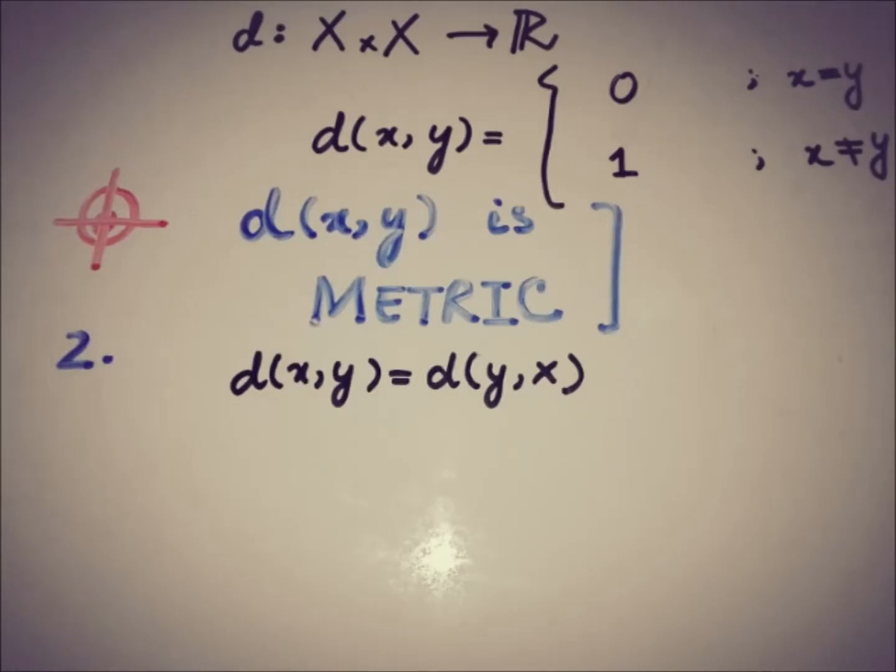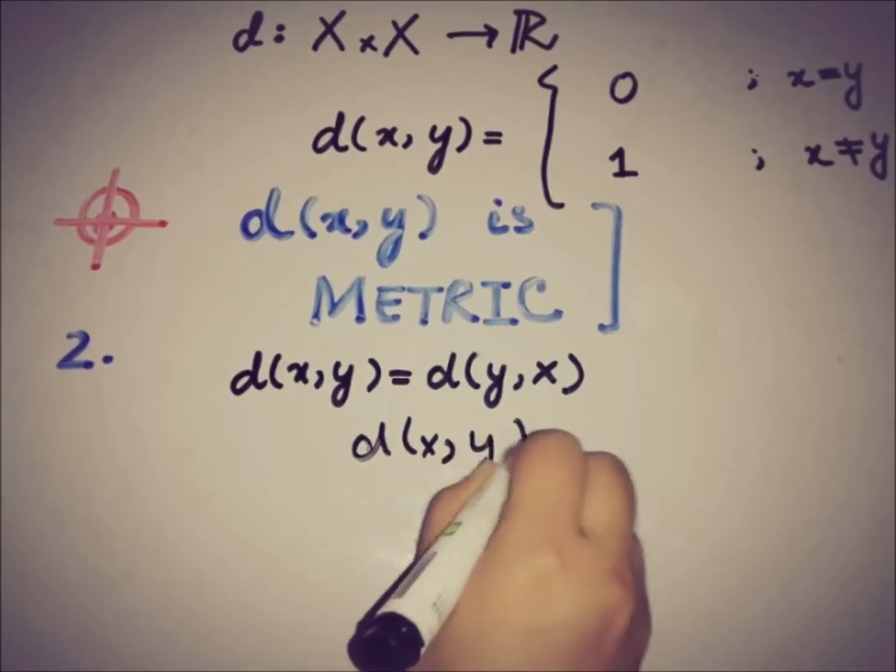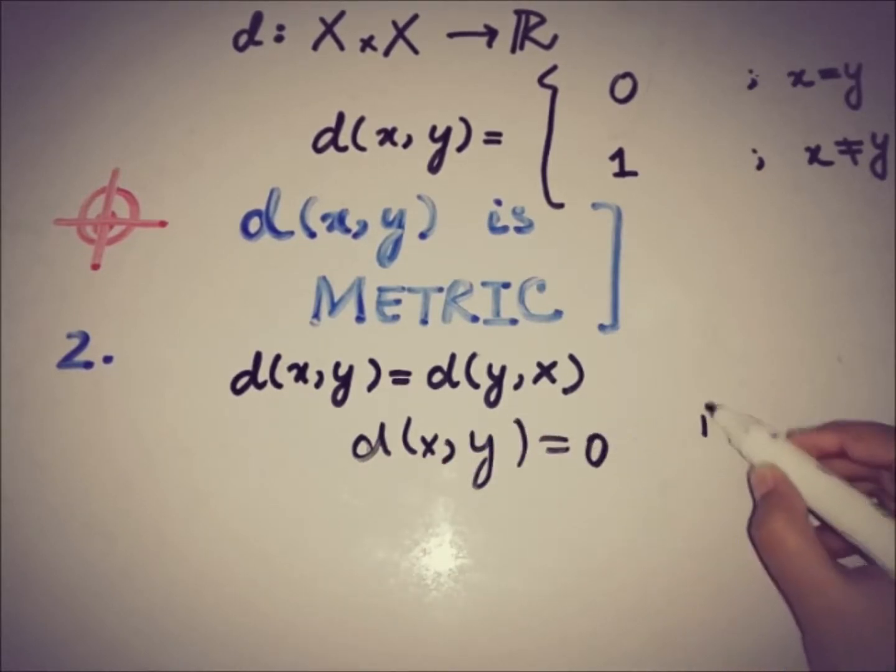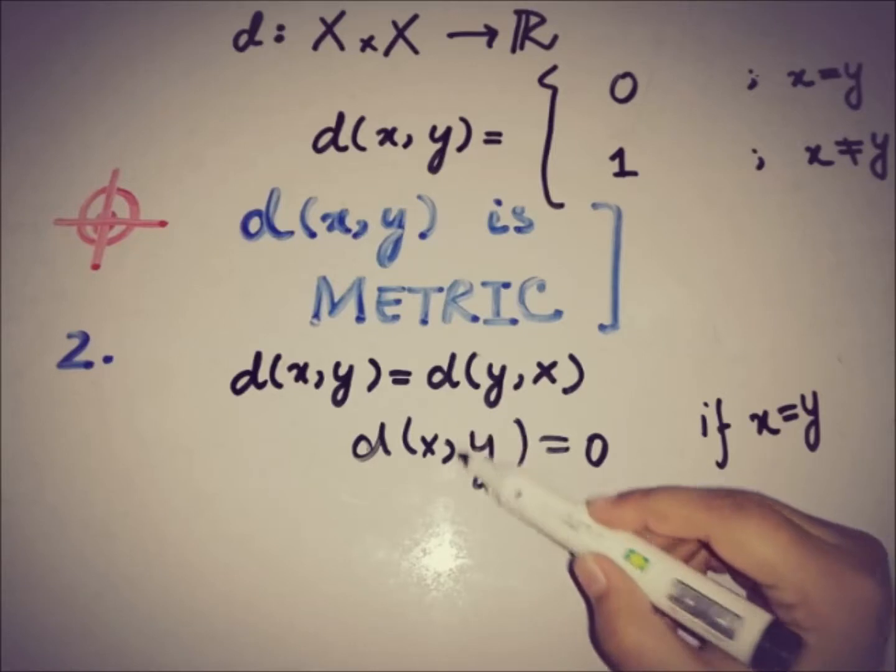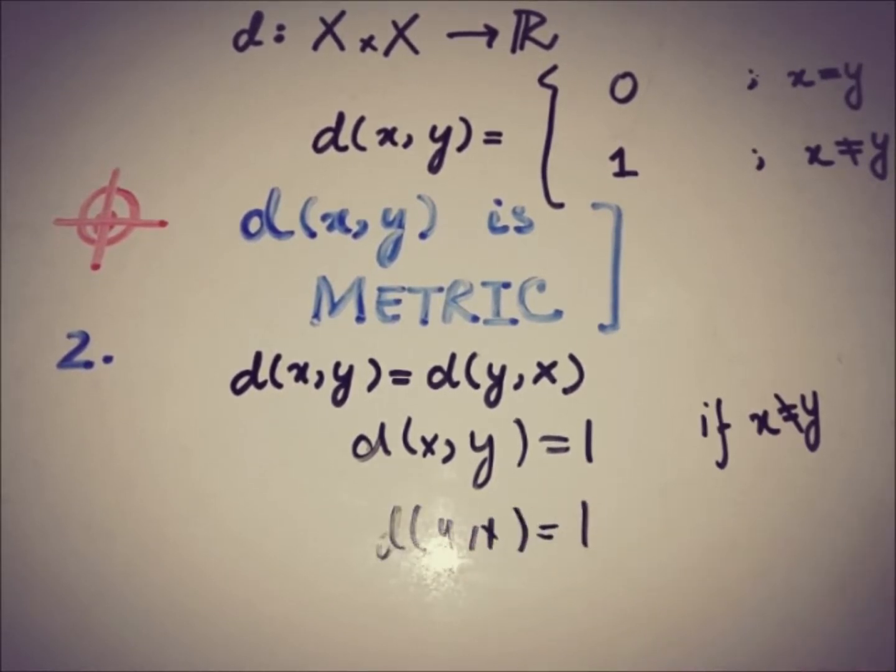The second condition is about symmetry: d(x,y) equals d(y,x). So if d(x,y) equals 0 when x equals y, then we know that d(y,x) is also equal to 0 because of the definition of the function. But if d(x,y) equals 1 when x is not equal to y, then the same goes for d(y,x) equals 1 because x is not equal to y. So by definition, the function has symmetry in it.